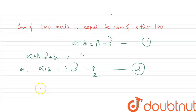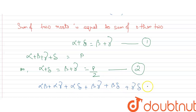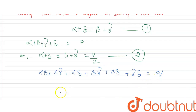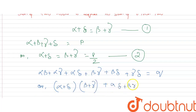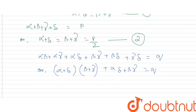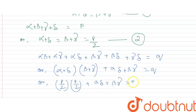Next, the sum of the product of roots taken two at a time is: alpha·beta + alpha·gamma + alpha·delta + beta·gamma + beta·delta + gamma·delta = q. We can rewrite this as (alpha + delta)(beta + gamma) + alpha·delta + beta·gamma = q. Substituting from equation 2: (p/2)(p/2) + alpha·delta + beta·gamma = q.